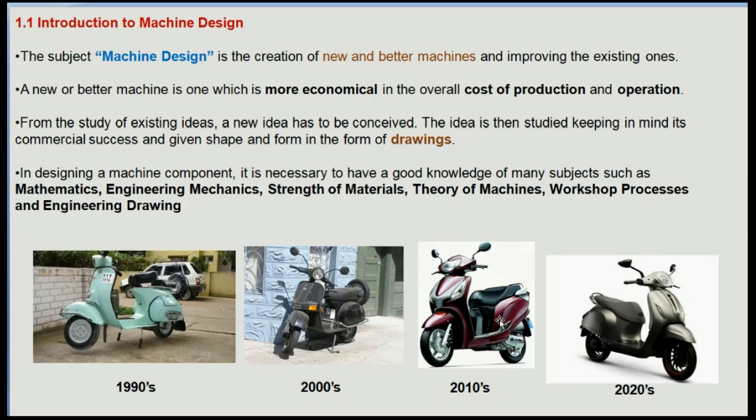Here you can see a classic example of how things have changed. In four photographs, the same thing is shown — a scooter or scooty. It has two wheels, one handle, and is capable of carrying two persons. But its fuel efficiency, look, and ergonomics — the styling or comfort — have changed from 1990 to 2020.